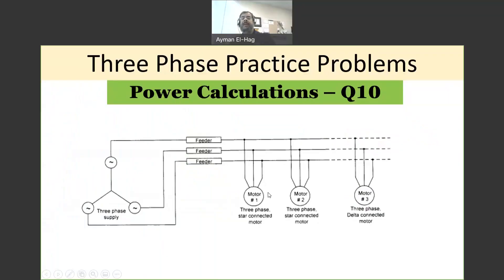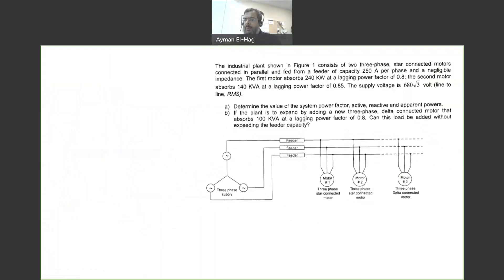Hi everyone, and welcome back to this series of three-phase problems. In this question, we have two loads connected in parallel as usual, and we are given the power rating of every single load of these two. We are also given extra information that we didn't see before, which is a feeder capacity of 250 amp.